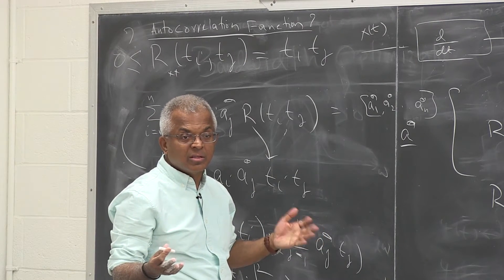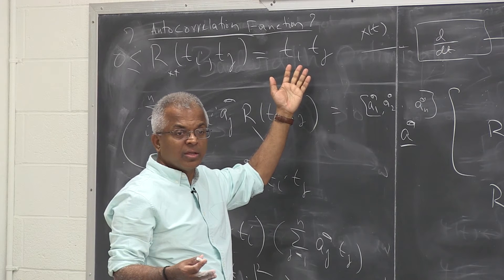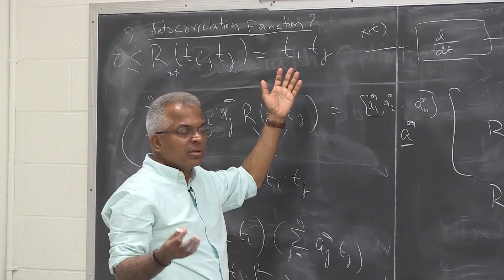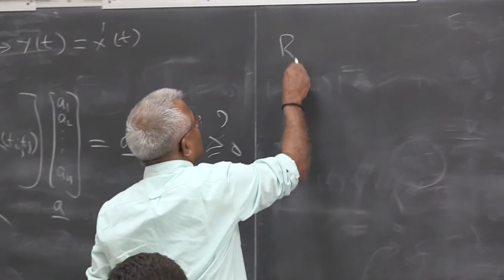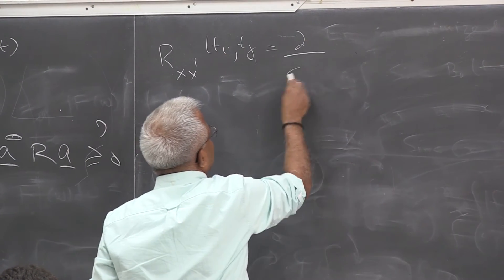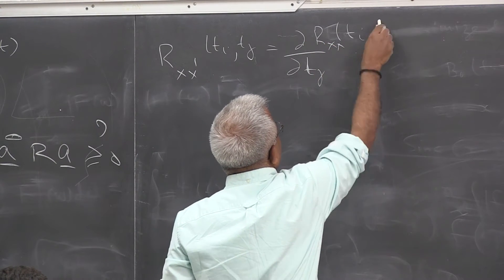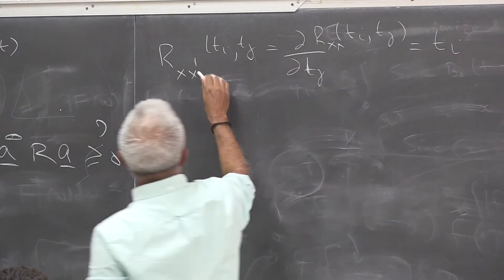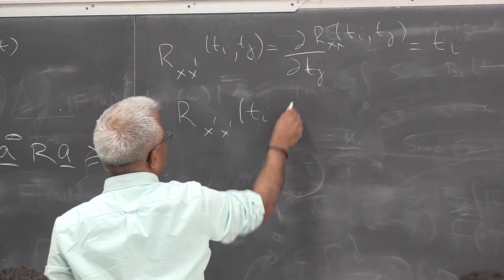Of what? Differentiation of what? Alright, so if you differentiate with respect to t_j, what do you get? t_i on the other side. Okay, then second derivative? t1, it will be 1. So do you, anybody remember this? Or R_x,x'(t_i, t_j) is what? So you need to have some, so this is going to be t_i. And then R_x',x'(t_i, t_j) will be?